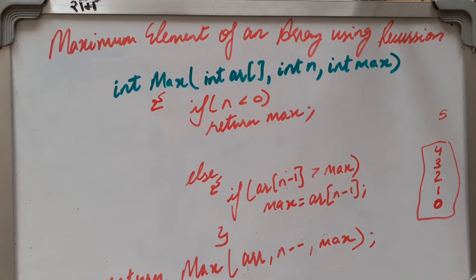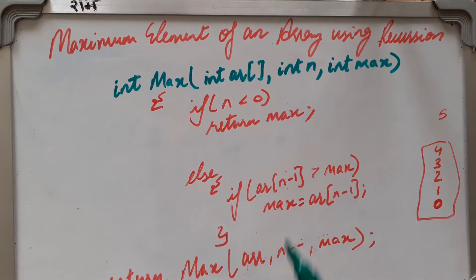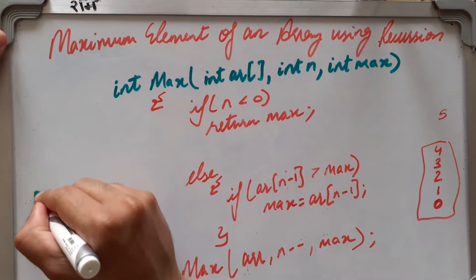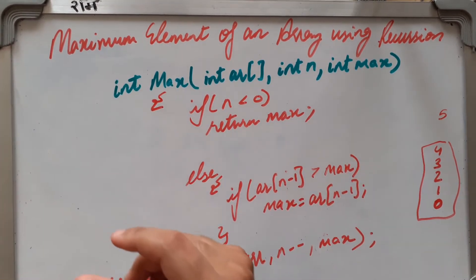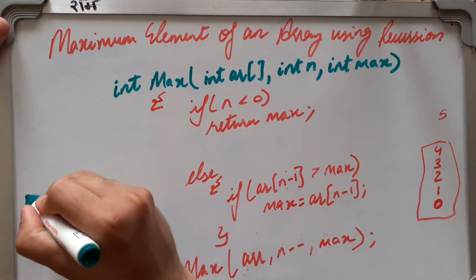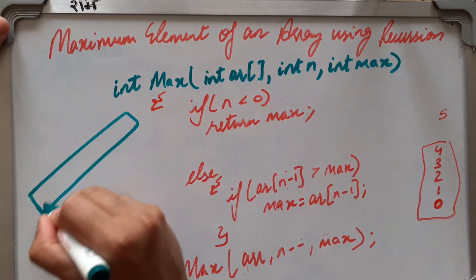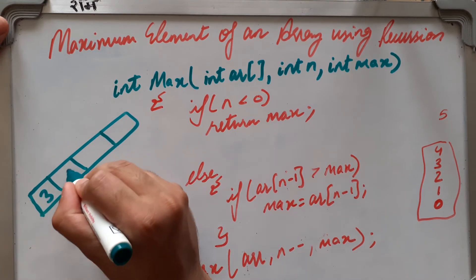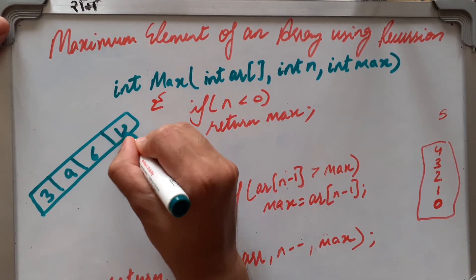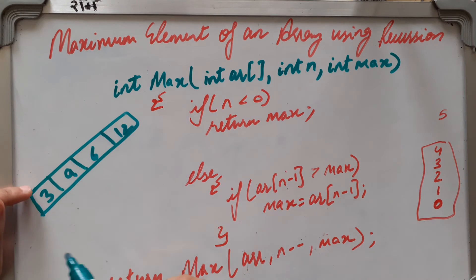Now I will tell you how it is going to work. First, suppose we are having an array of 4 elements in which we are having 3, 9, 6, and 12. First it will go for 3.